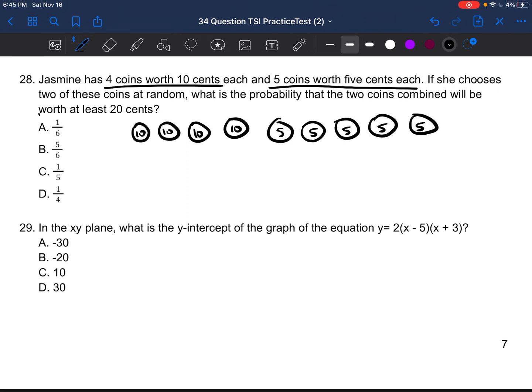If she chooses two of these coins at random, what is the probability that the two coins combined will be worth at least 20 cents? So she's going to end up having two picks. The first pick, in order to get at least 20 cents, has to be a dime worth 10 cents. And then her second pick also has to be a dime worth 10 cents. Because if she were to pick a dime and then a nickel, it would only be 15 cents. If she were to pick two nickels, it would only add to be 10 cents. So to make at least 20 cents, her first pick has to be a dime and her second pick has to be a dime. So let's go ahead and see how we would get fractions to represent these.